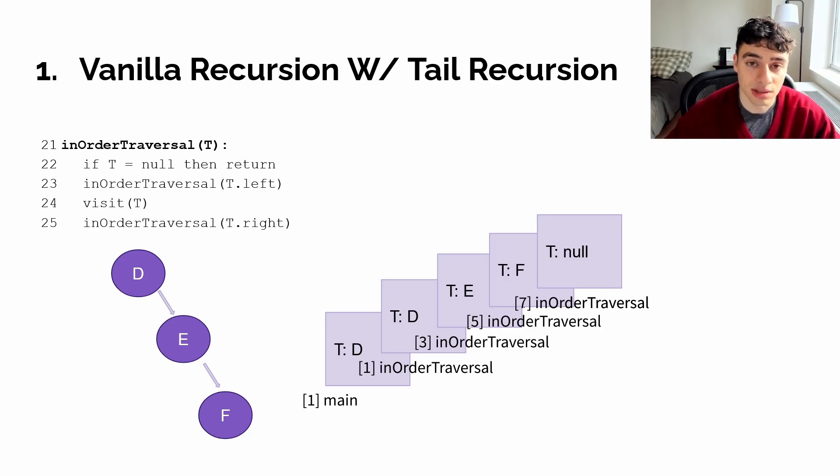If that were the case, then the maximum size of the call stack would only be two at any point because once we got to line 25, knowing that we don't use anything with the output of that in-order traversal call, we could just pop off that frame and move on to the next one, adding it to the call stack, only keeping two frames on the stack at a time, only one in-order traversal frame on the stack at a time.